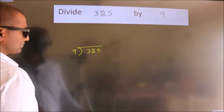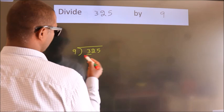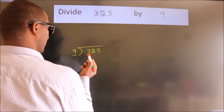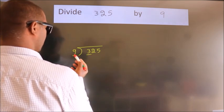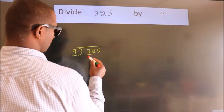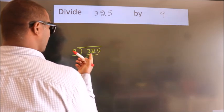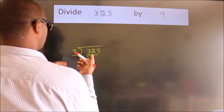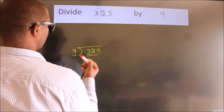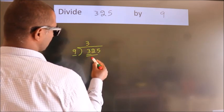Next, here we have 3. Here 9. 3 is smaller than 9, so we should take 2 numbers: 32. A number close to 32 in the 9 table is 9 threes, 27.